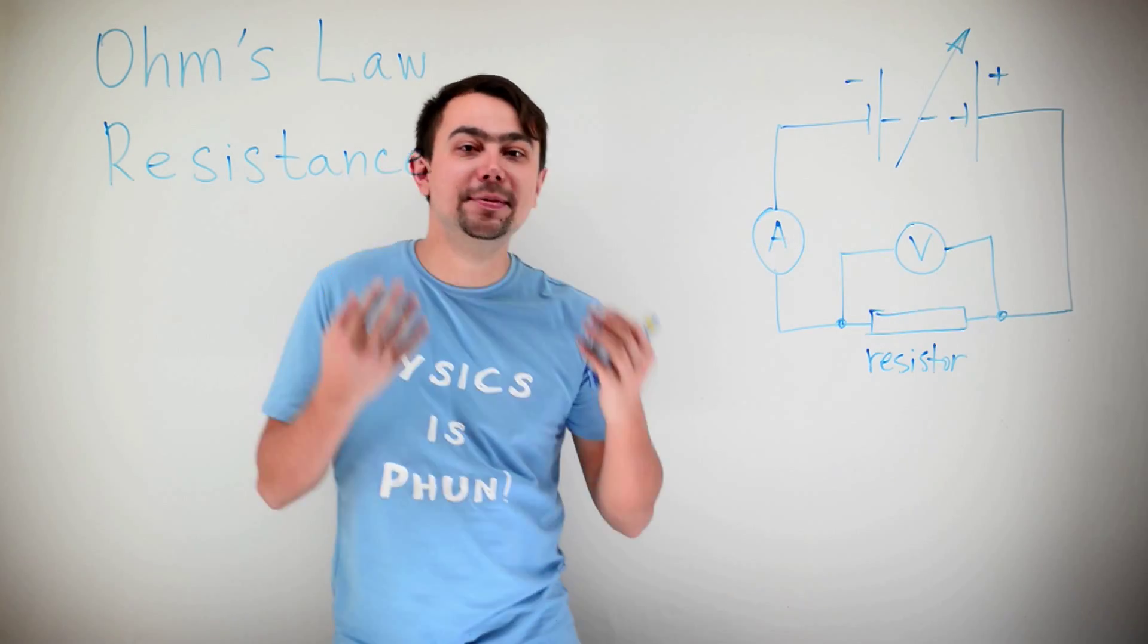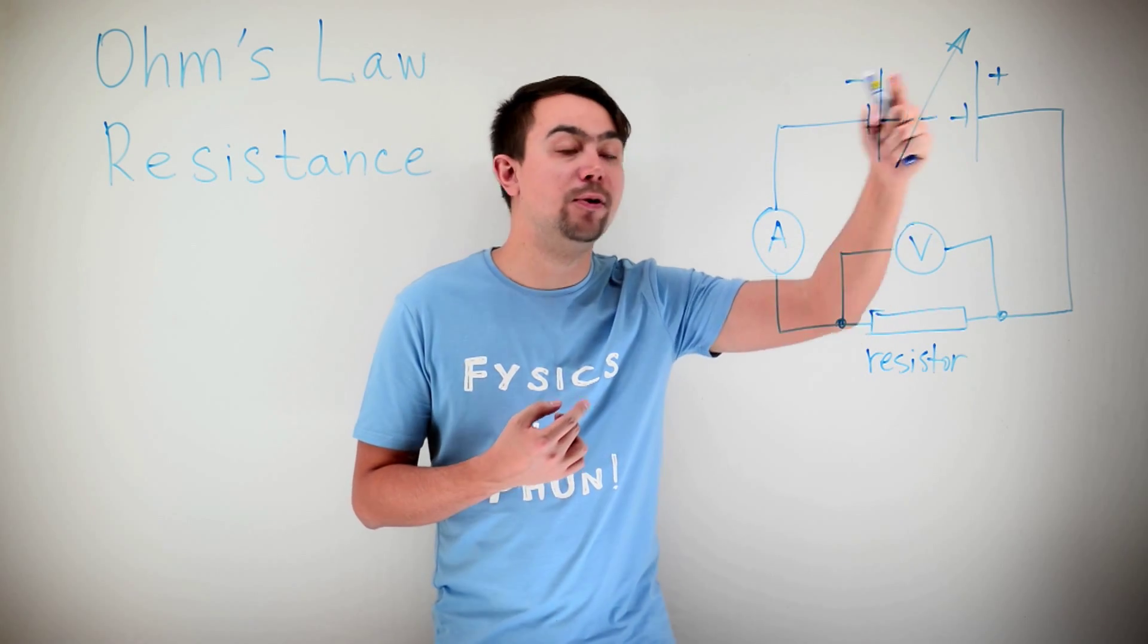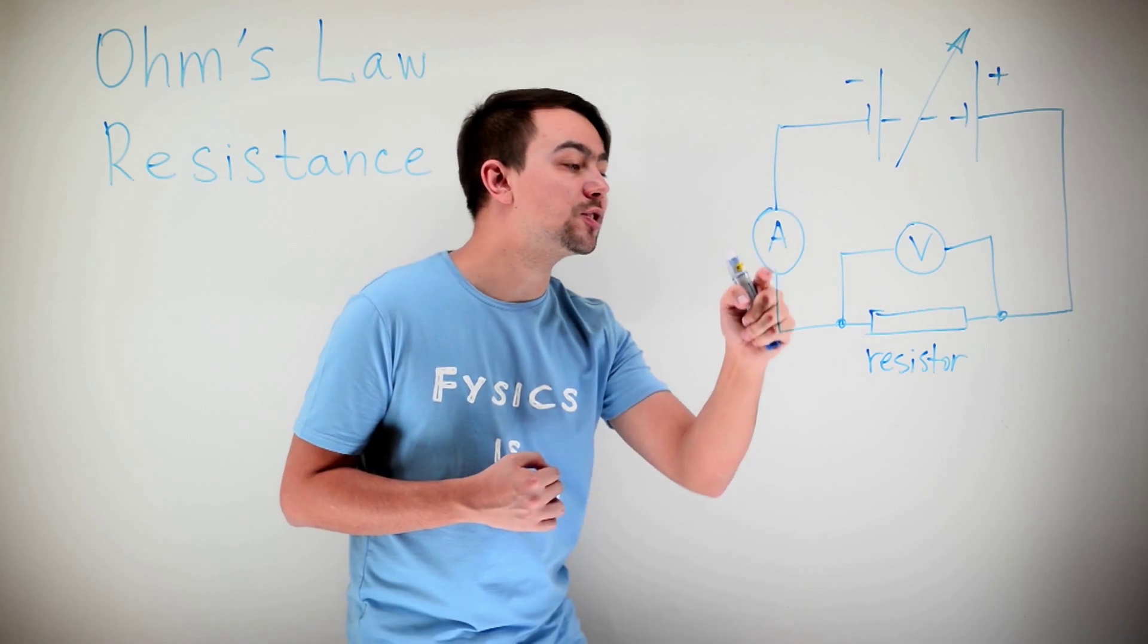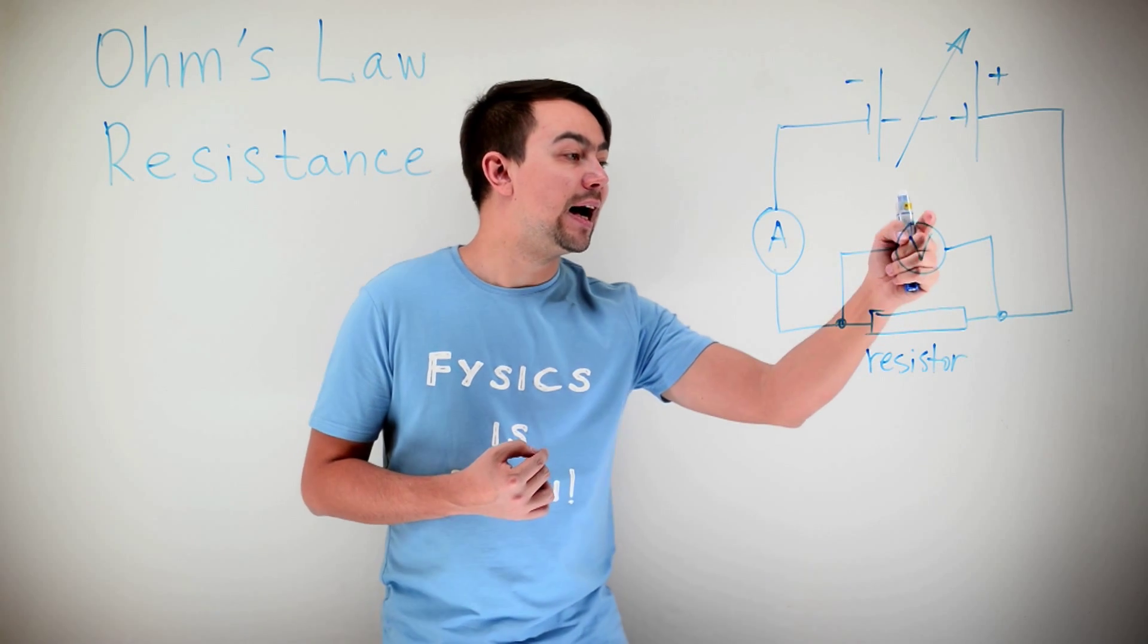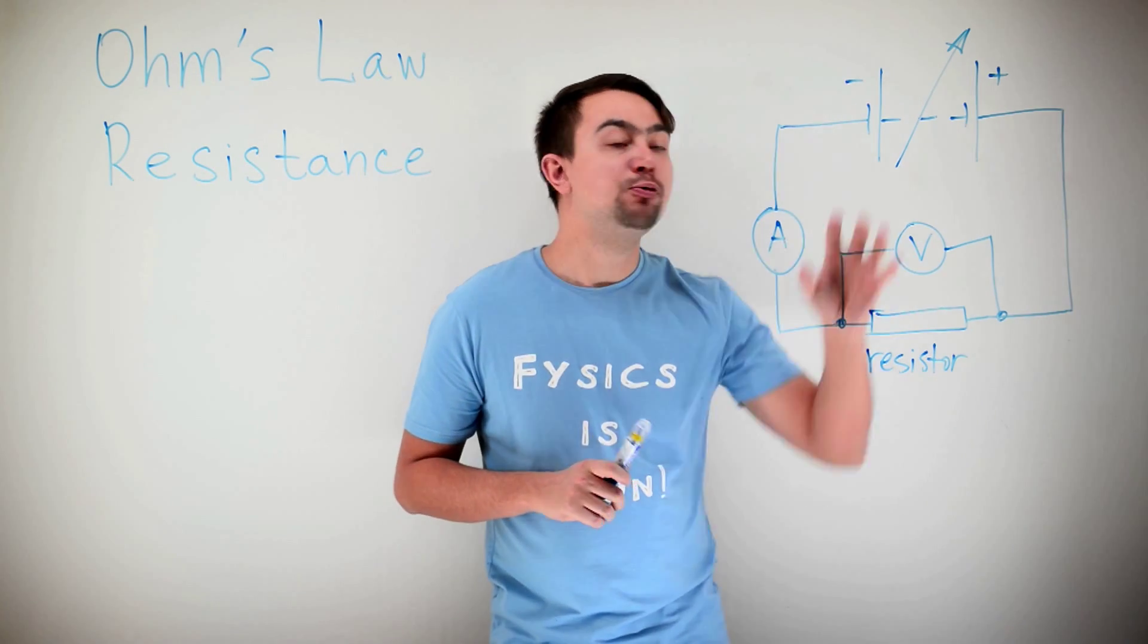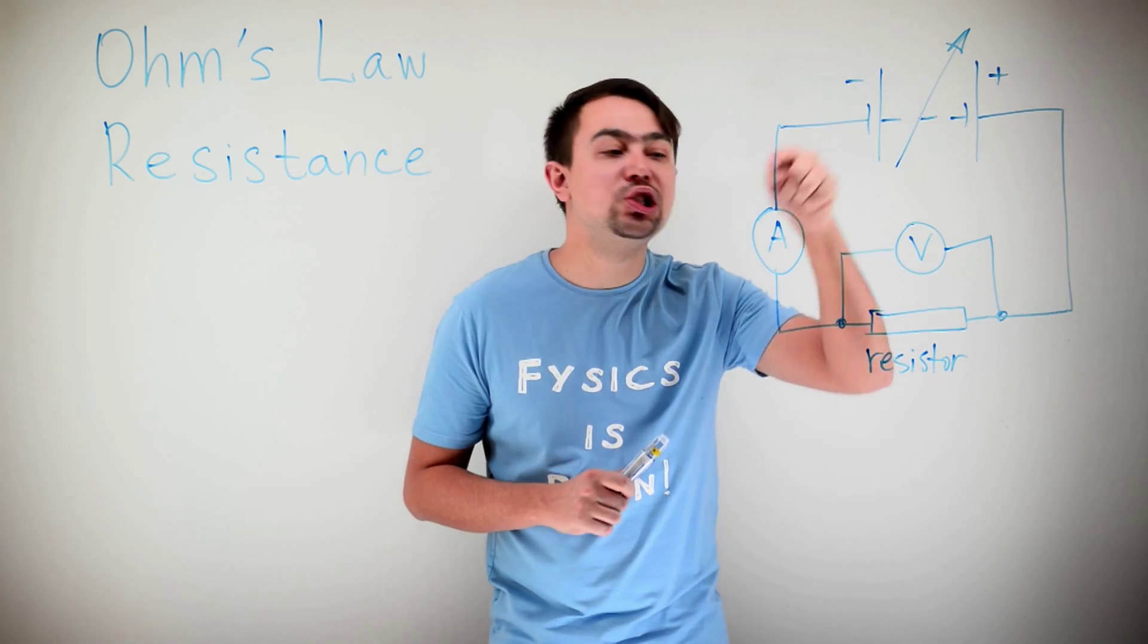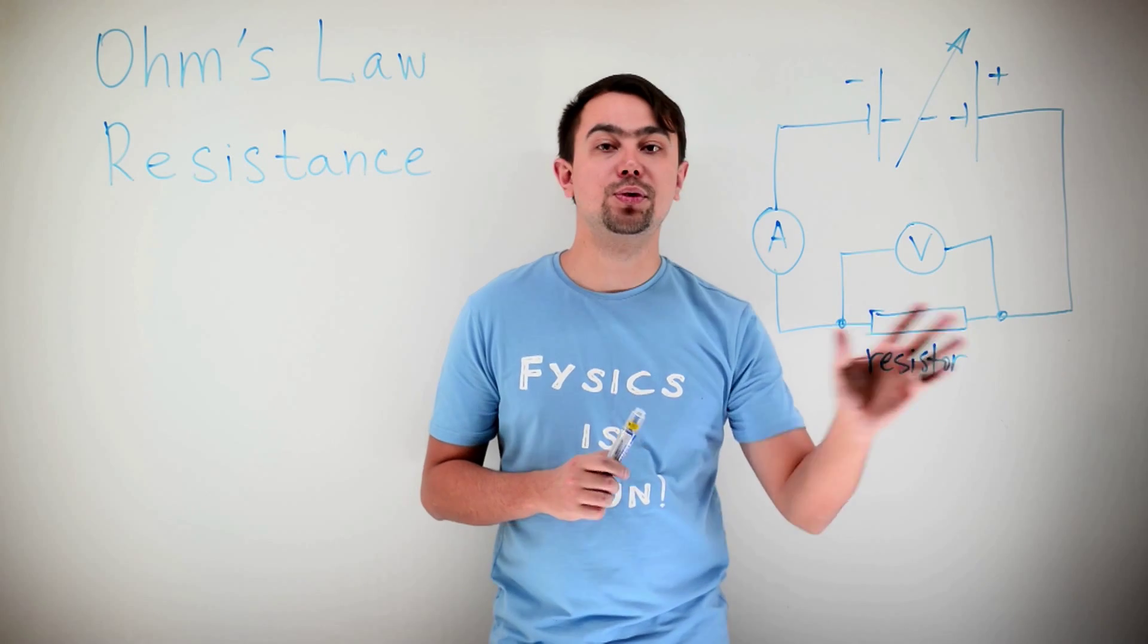Let's build a simple circuit. In this circuit, we have a variable power supply. That is, the voltage can be altered. We have an ammeter, which measures the current through this resistor. And the voltmeter measures the voltage on the resistor. Now, if we change the voltage on the power supply, that will change the current through the circuit, and that will change the current through the resistor.